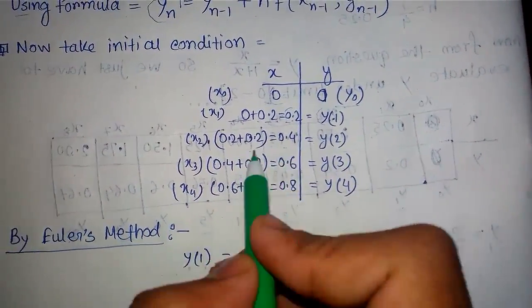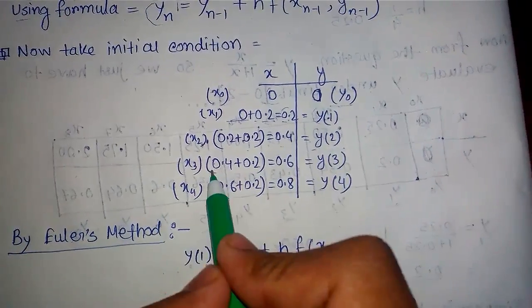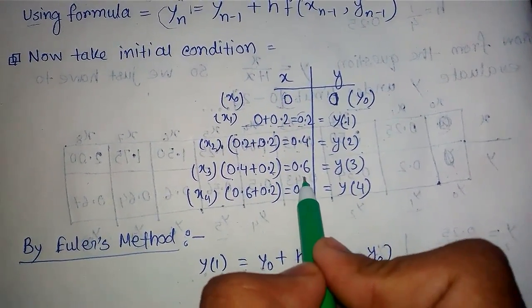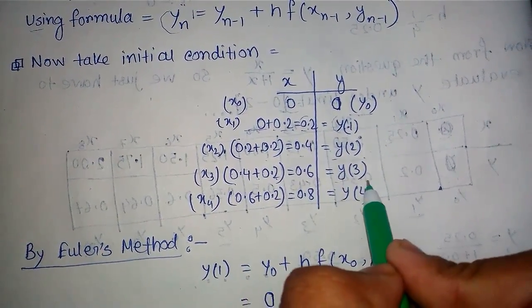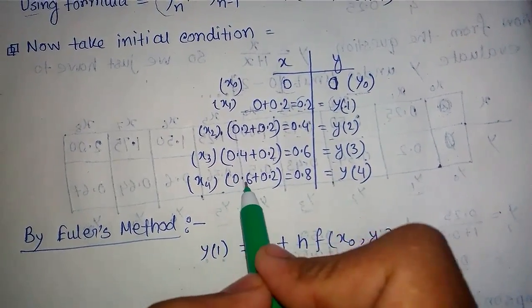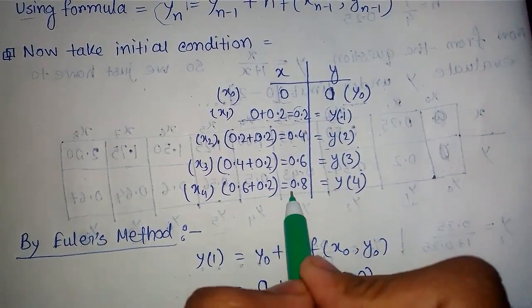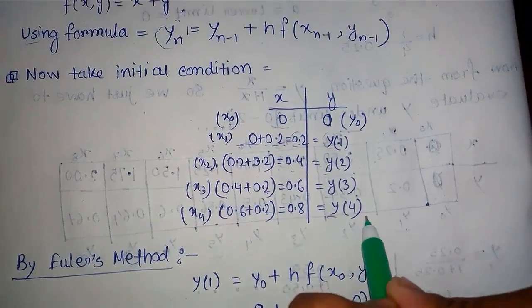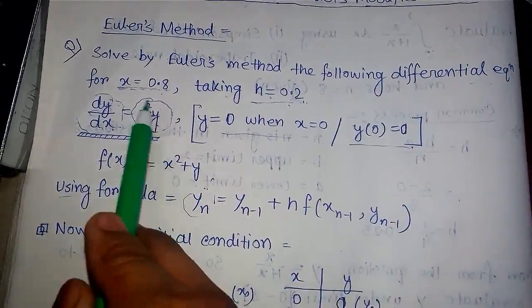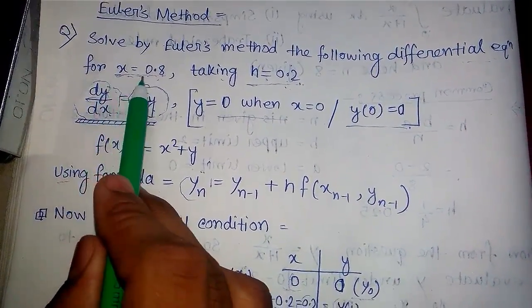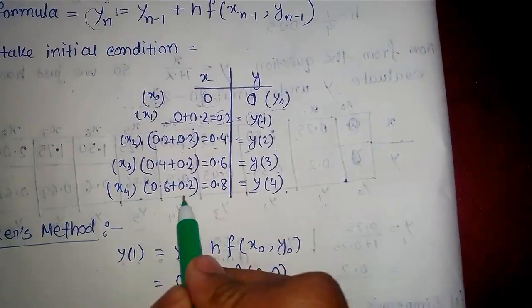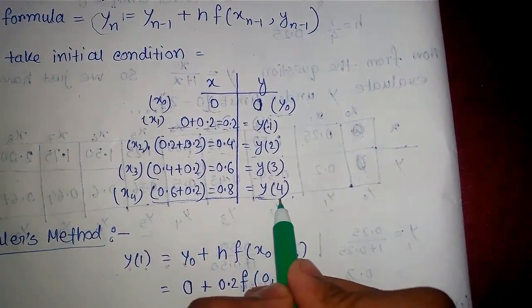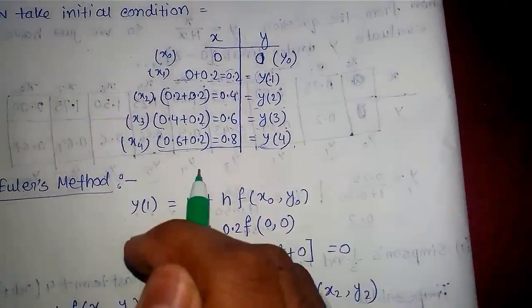After that, 0.2 plus 0.2 equals 0.4 and we get y₂. Then 0.4 plus 0.2 equals 0.6 and we get y₃. Finally, 0.6 plus 0.2 equals 0.8 and for that our value is y₄. We have to calculate the value for x equals to 0.8, which corresponds to y₄, so we must calculate y₁, y₂, y₃, and y₄.